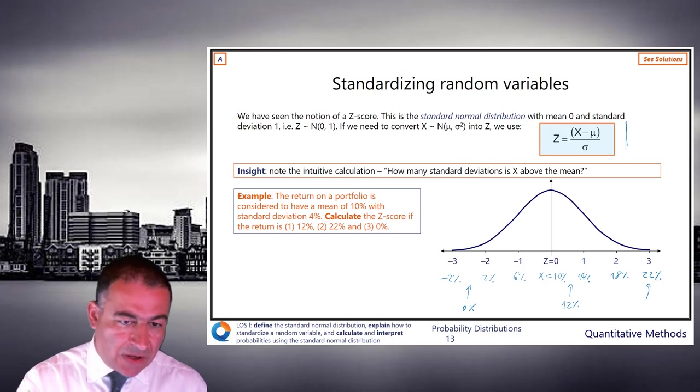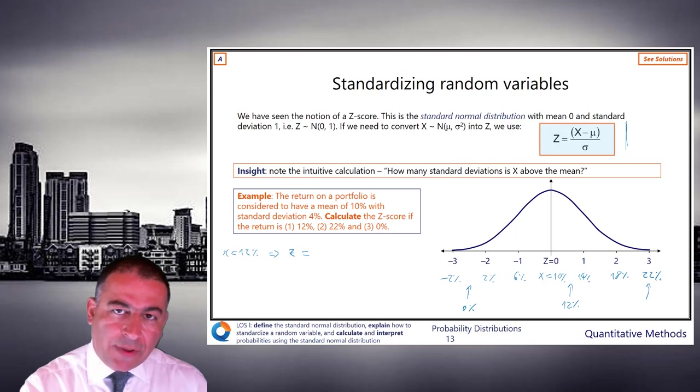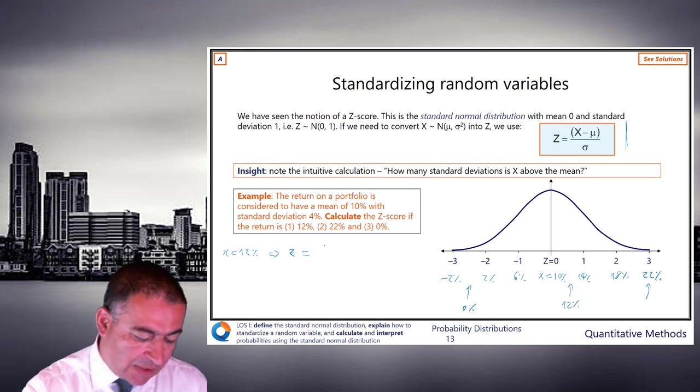But let's now just verify that using the formula. So x equals 12% gives us z equals, well, think about the formula or think about common sense. It's 12. What is the, how big is the z? It's 12. How far is that above the mean?